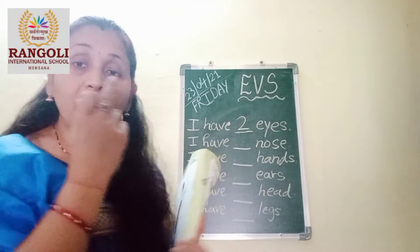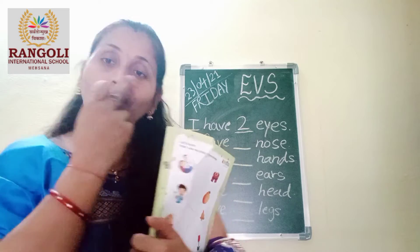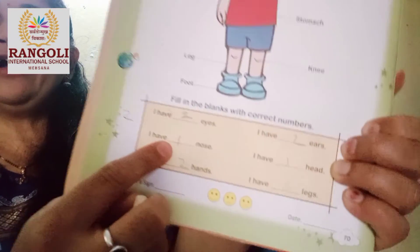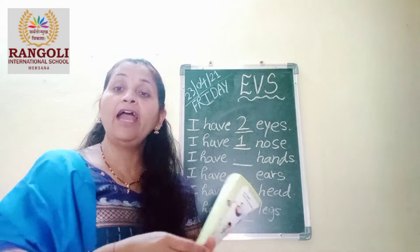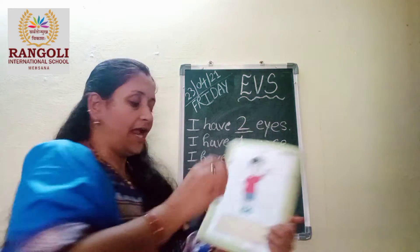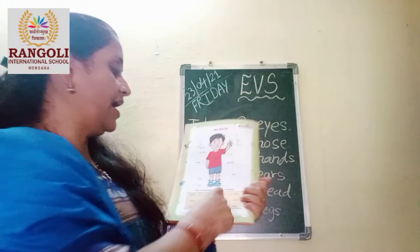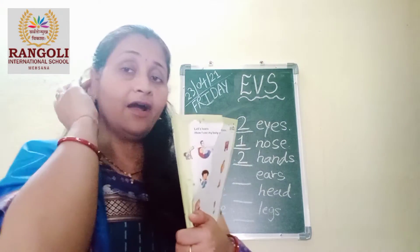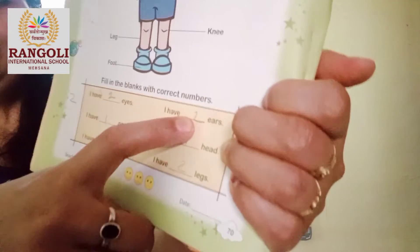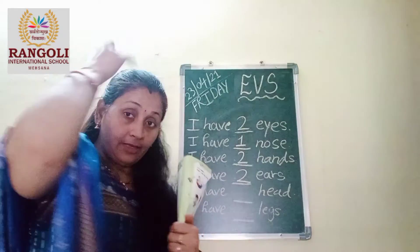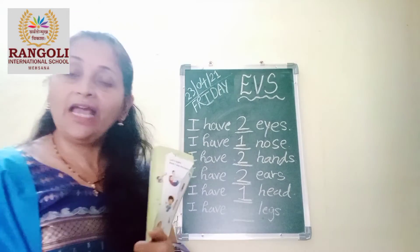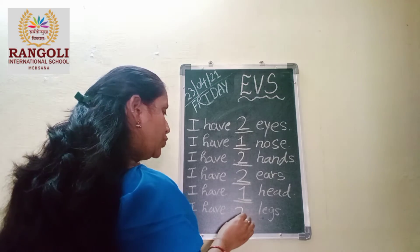Then, how many noses do we have? One nose. So write one in the second blank. Then, how many hands? Two hands. Write two in the third blank. How many ears? Two ears — write two. Then how many heads? One head, write one. Legs — how many legs? Two legs, write two.